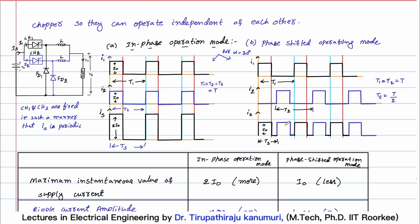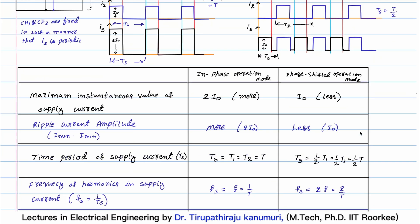In phase-shifted operating mode, the supply current has some breaks or ripple. To completely remove this, we need the supply to always provide current to one of the choppers. This can be achieved by making each chopper operate for 50% instead of 30%. If each one operates for 50%, then the first will conduct, immediately followed by the second, then the first again, and so on. In this manner, the supply current will also be constant like the load current. By keeping the duty cycle at 50%, we can maintain continuity of supply current, completely nullifying harmonics in the supply current.